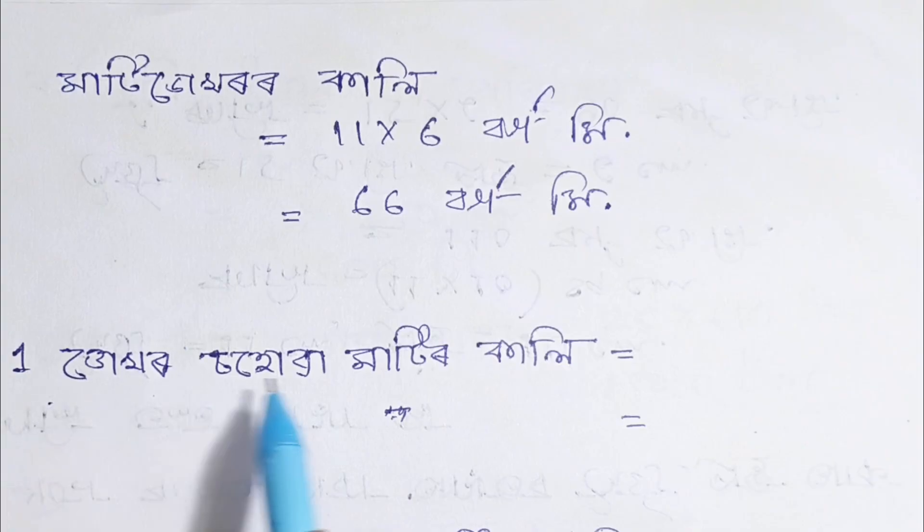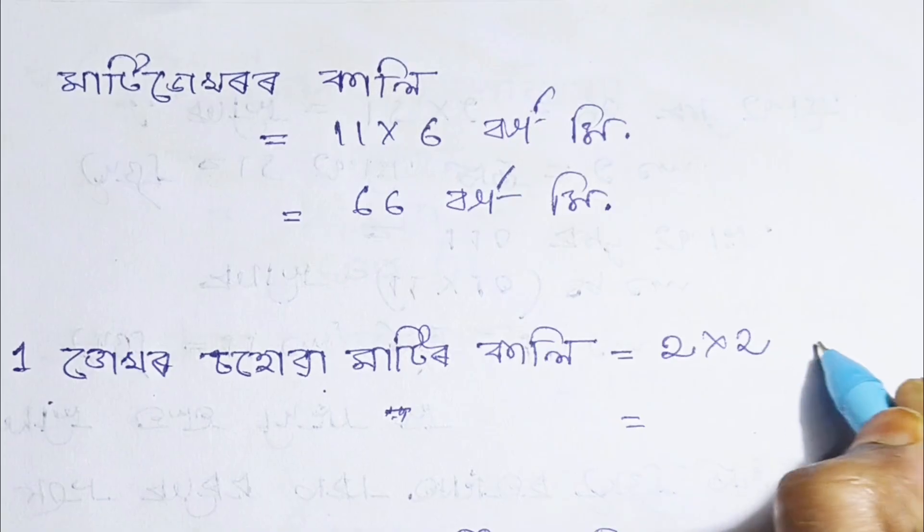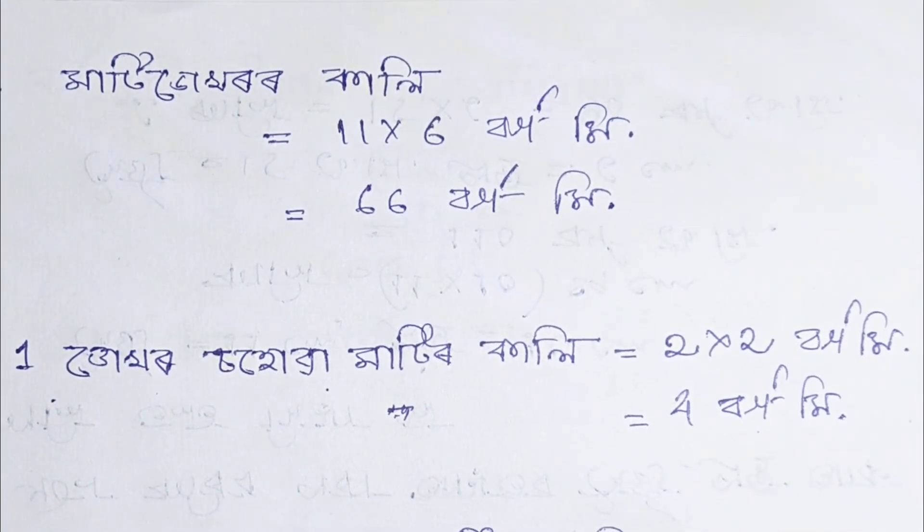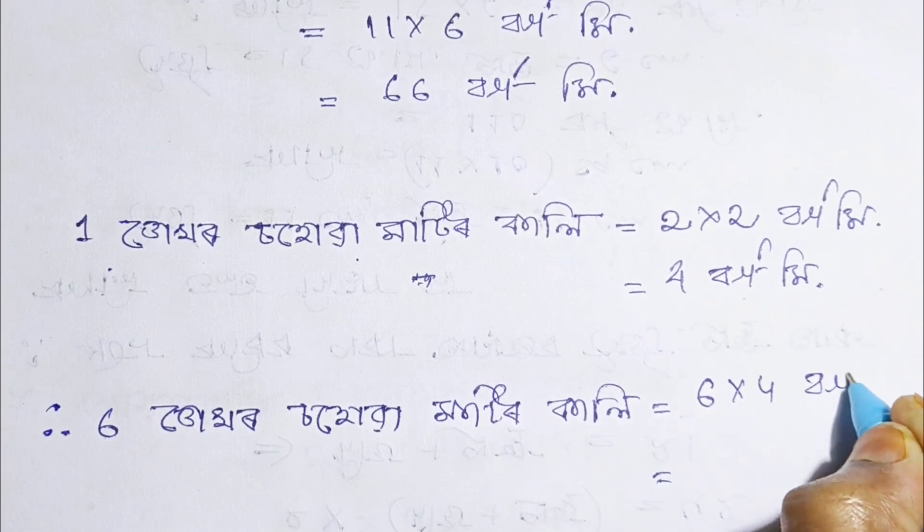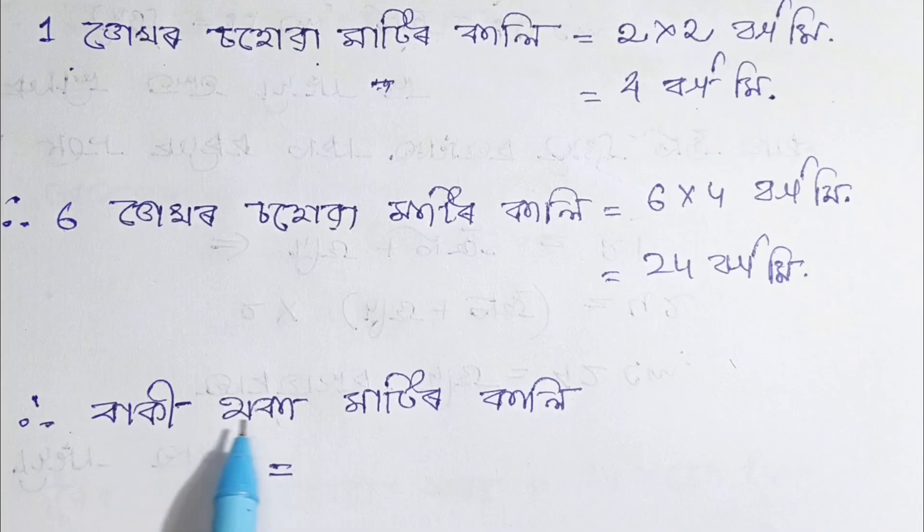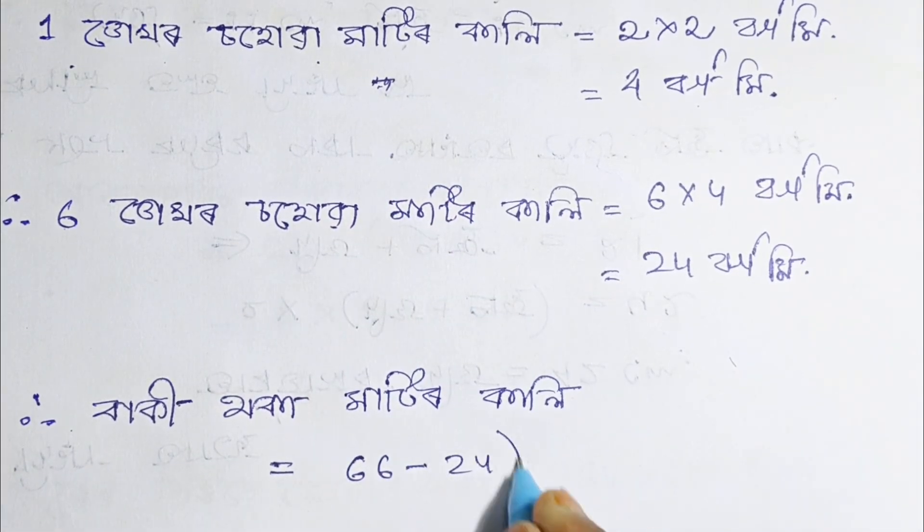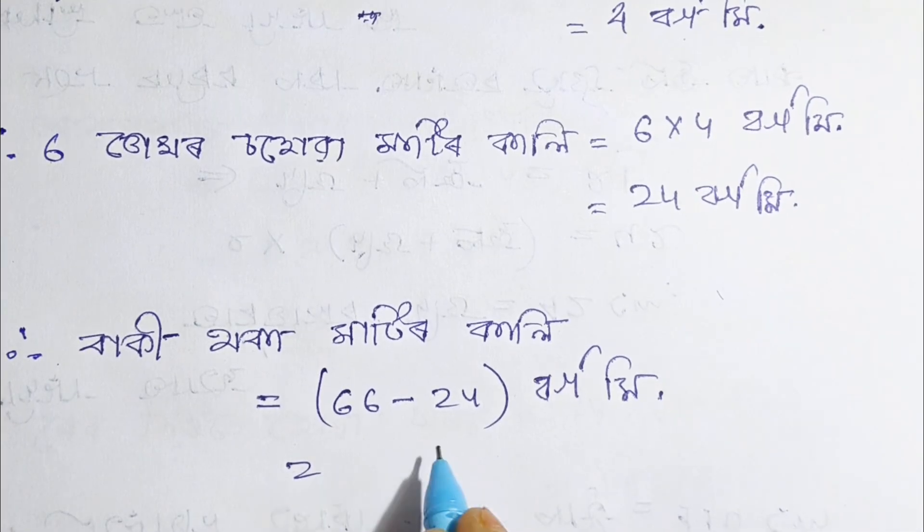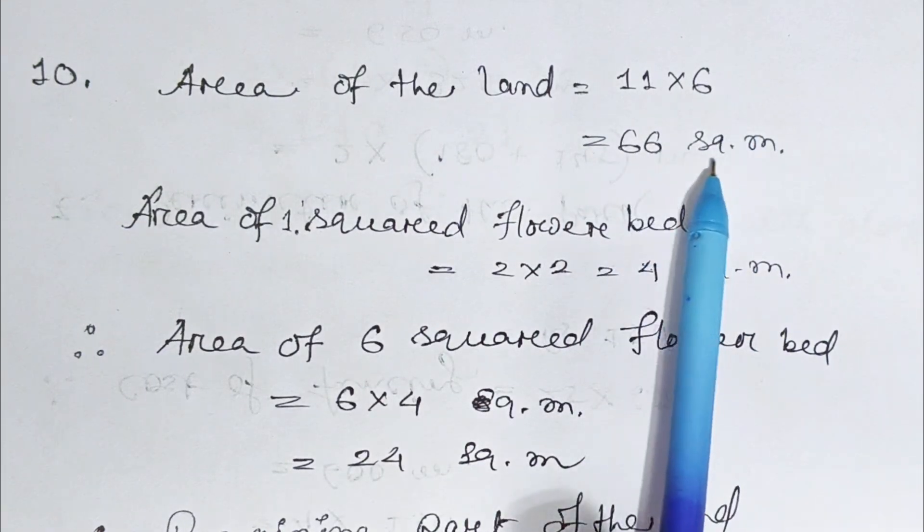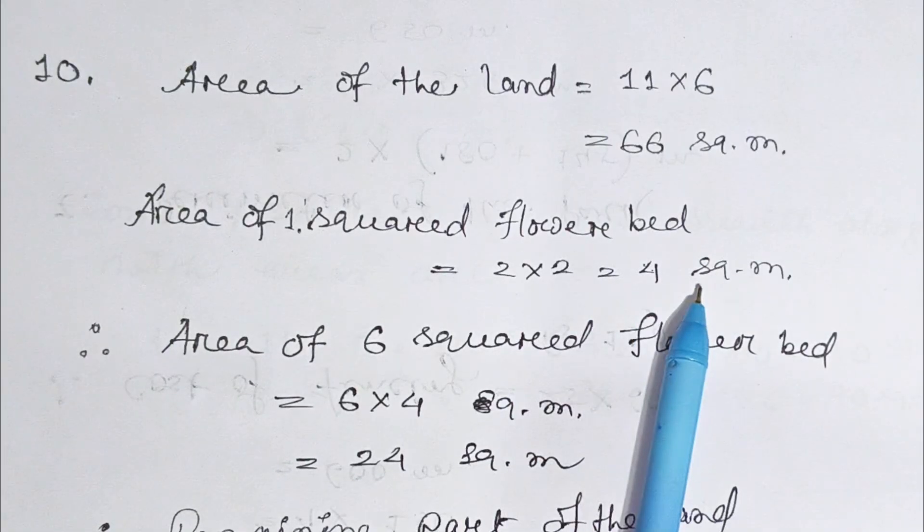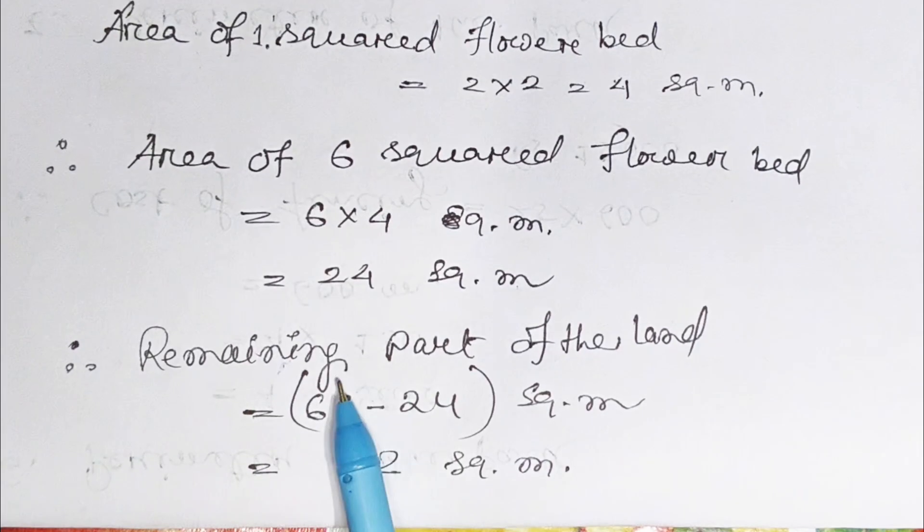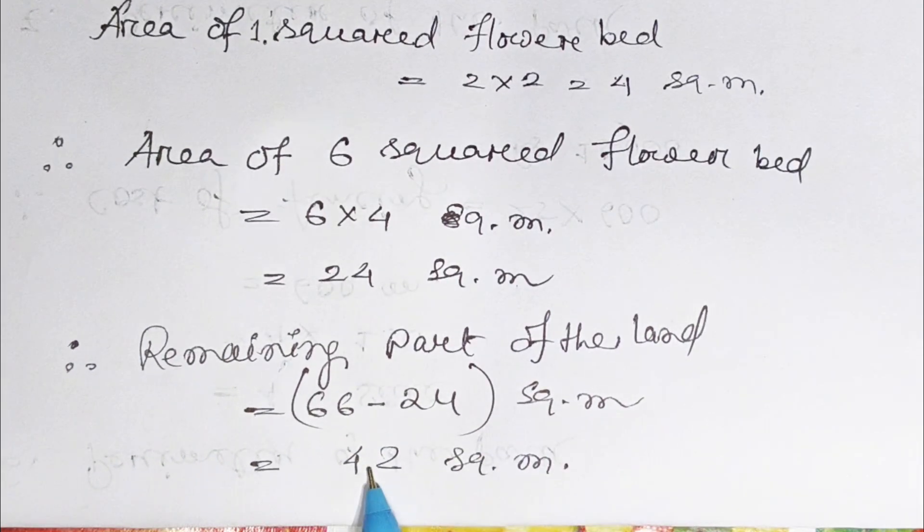Number 10: The area of the land is 11 times 6 equals 66 square meter. The area of 1 squared flower bed is 2 times 2 equals 4 square meter. The area of 6 squared flower beds is 6 into 4 equals 24 square meter. Therefore, the remaining part of the land is 66 minus 24 equals 42 square meter.